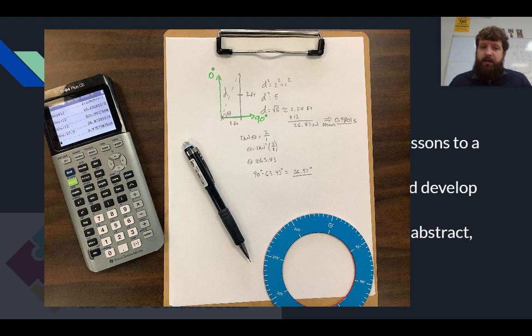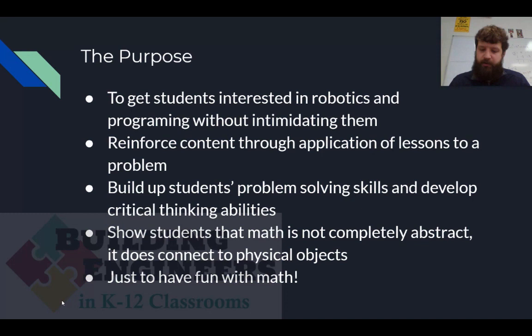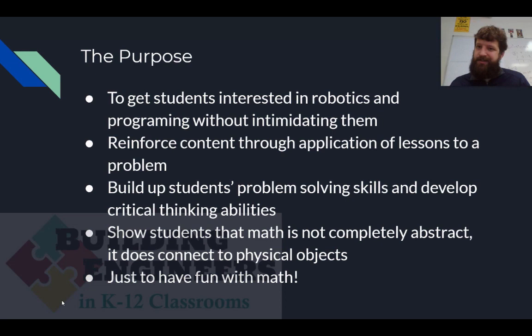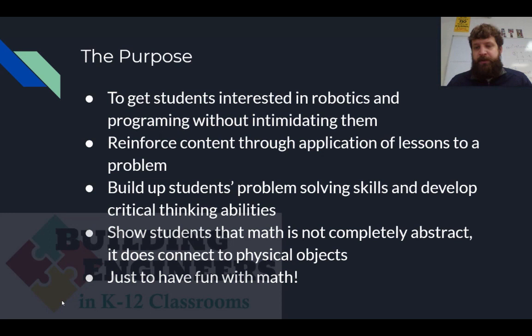The main purpose behind this activity is to get students interested in robotics and programming without intimidating them. Students already interested in programming are probably already doing this on their own — several students have told me they got Spheros for Christmas before we ever did the activity. This is trying to get students who would never think to do this to consider it as something they'd be interested in pursuing. It also reinforces classroom concepts through application. We did this after we did trig, so students are comfortable using trig on paper — but this project requires them to use trig on the floor: finding the angle the robot needs to drive, using the Pythagorean theorem for distance, and using the distance formula to calculate speed.